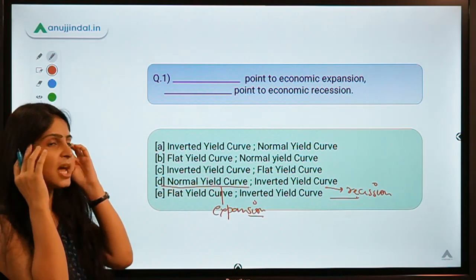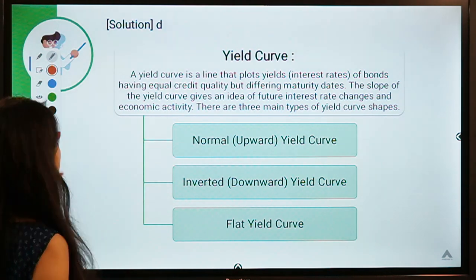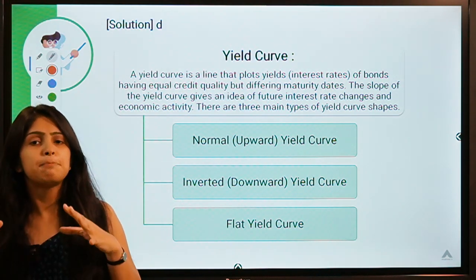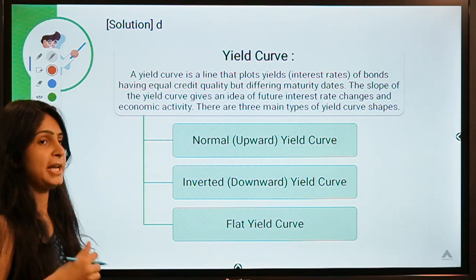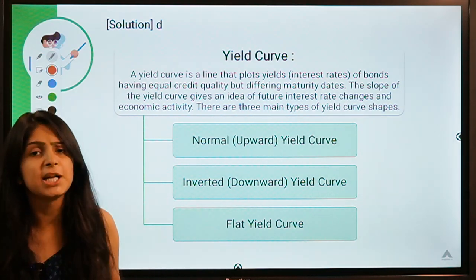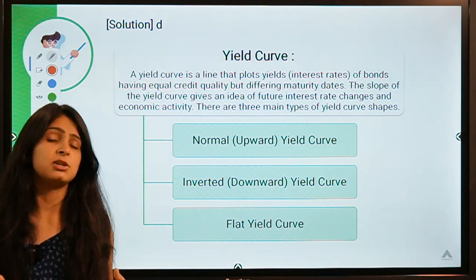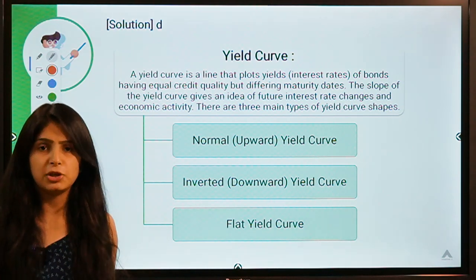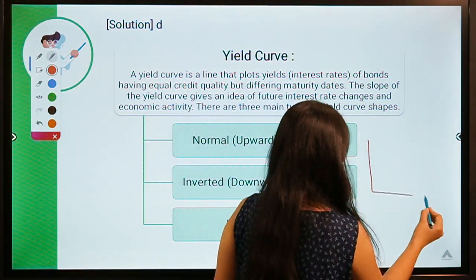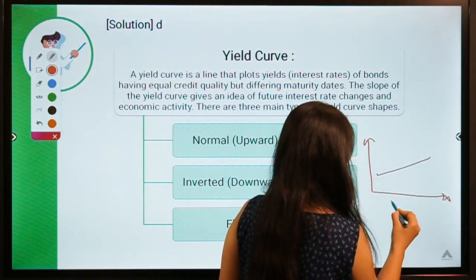Before moving to the types, let's first understand what is meant by a yield curve. A yield curve is nothing but a line that tells you about the reward that a person putting money into any fixed income scheme — like bonds — can expect. Bonds provide investors with a fixed rate of return. What investors expect with regard to different maturities is told by a yield curve. On the x-axis there is maturity of the investment.